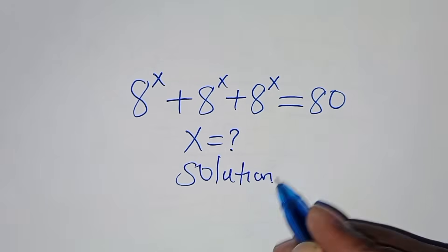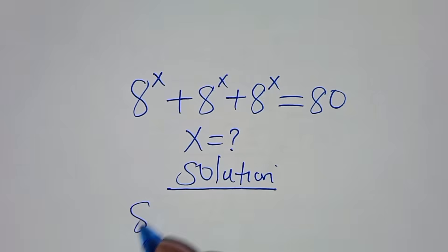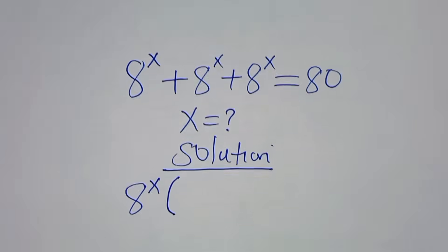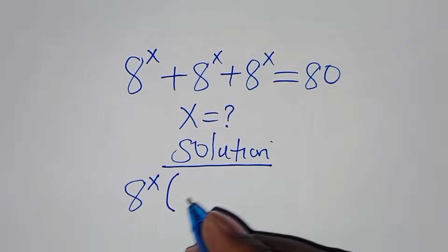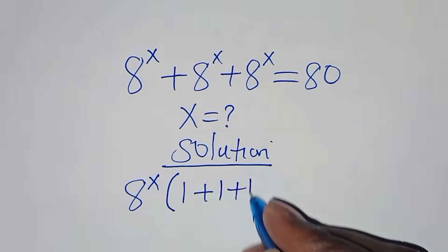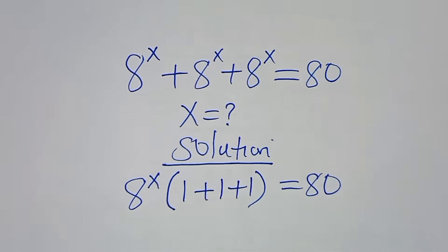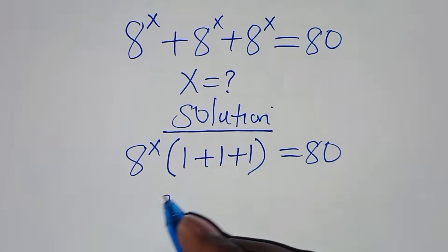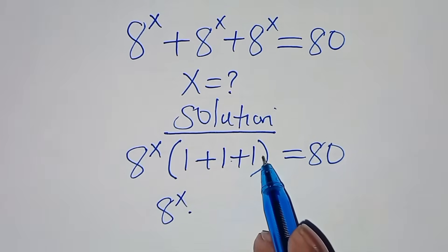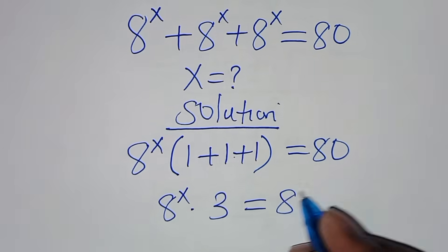Now, from here, you find that 8 to the power x is common, so let's factor out 8 to the power x. We'll have 8 to the power x multiplied by 1 plus 1 plus 1, which equals 3, and this is equal to 80.